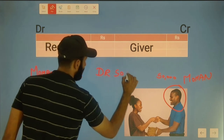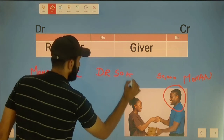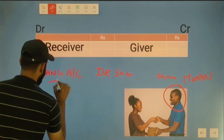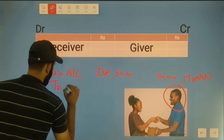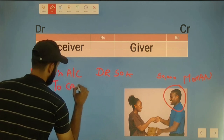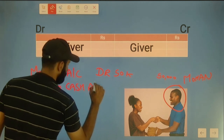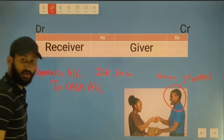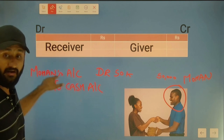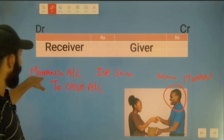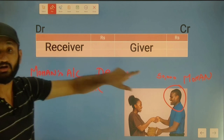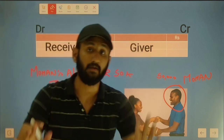Mohan is the receiver, so Mohan's account is debited. Debit 50,000. Mohan is receiving, so I have debited Mohan's account.